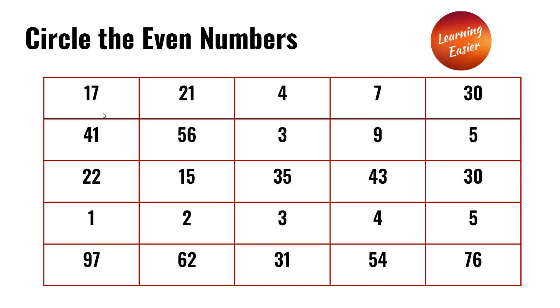In the first row we have 17, 21, 4, 7, and 30. The even numbers in the first row are 4 and 30.